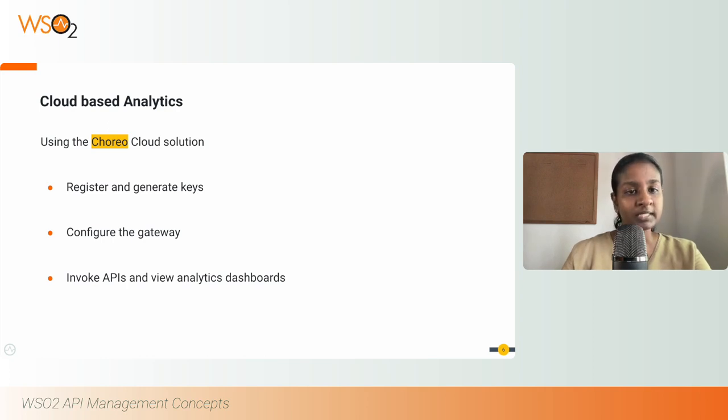You have to follow several steps in order to get started. You need to register with Choreo and generate a key that can be used to configure it in the gateway. This is used in publishing analytics events to the cloud.